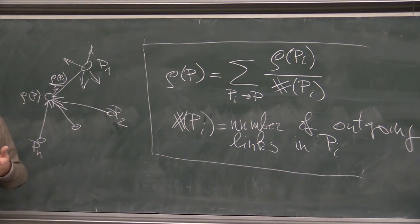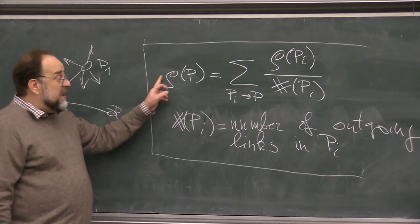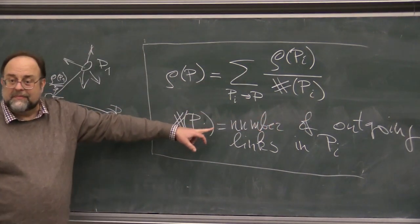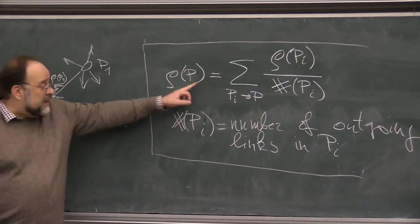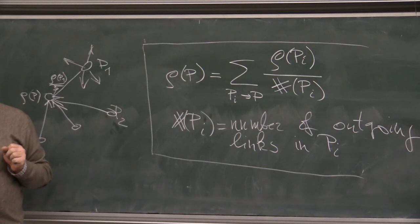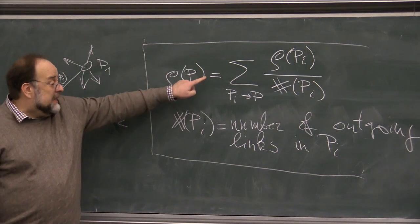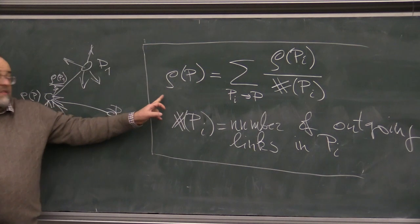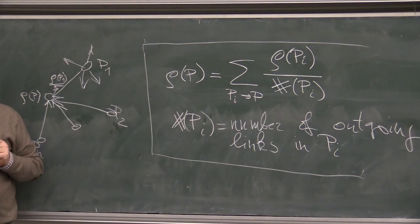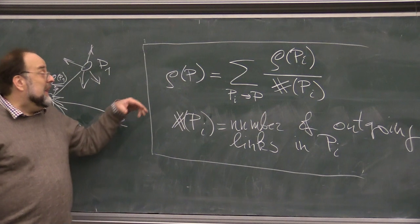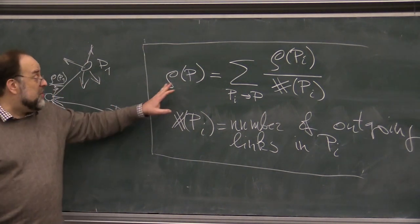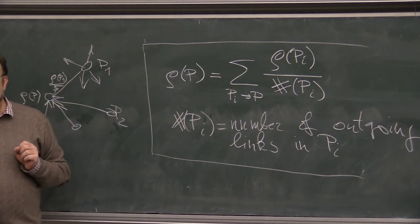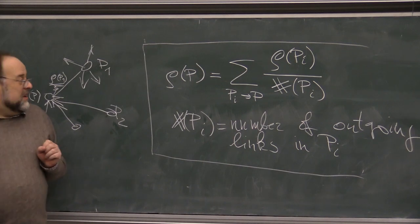But why would such a rank exist? How do we know that such a rank exists? And lo and behold, such rank, in fact, might not exist. So but this is a good starting point. So what page rank does, it tweaks this formula in a way that it guarantees the existence of such ranking function, right? And it allows reasonably fast computation of an approximation of such a function, right?